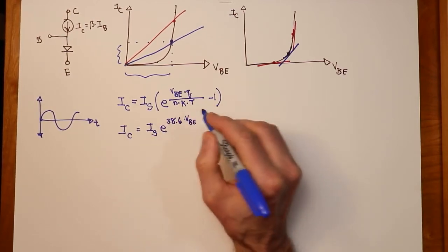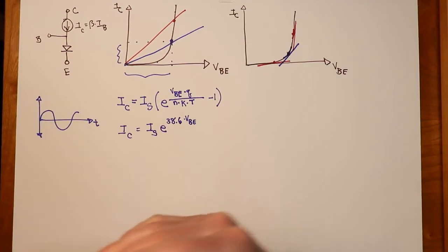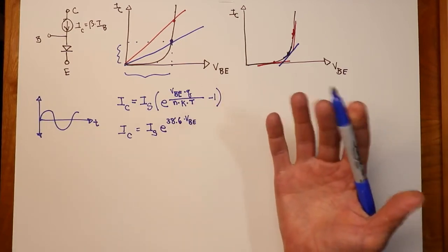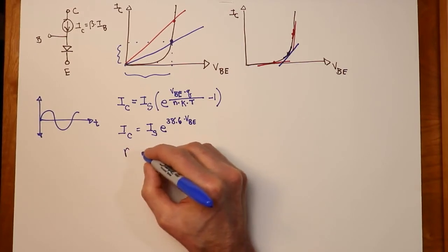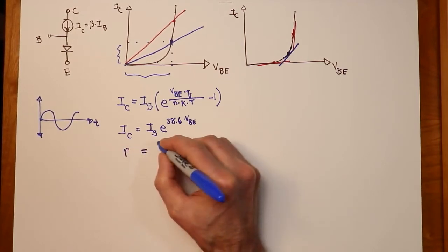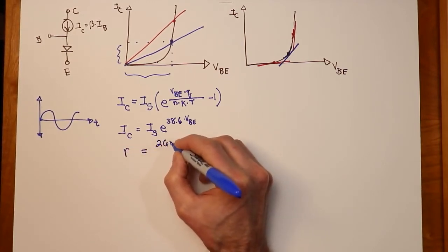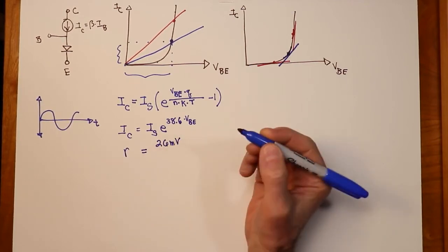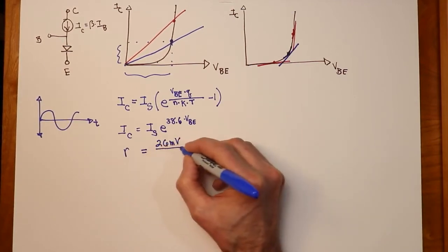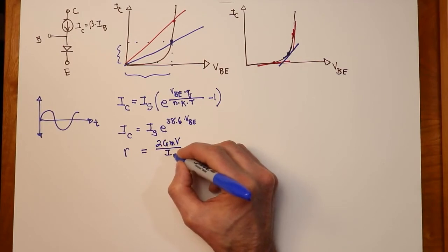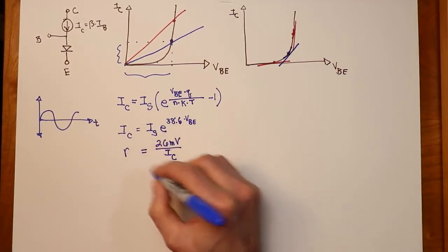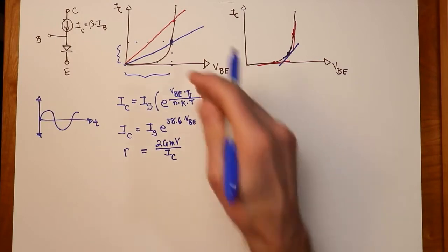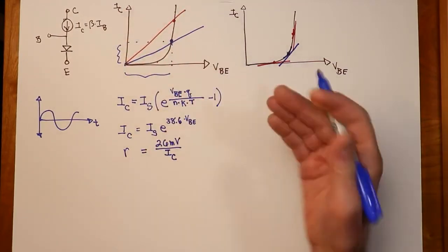So we'll take the derivative of this, and we wind up, here's sort of the bottom line, we wind up with a resistance value that's equal to 26 millivolts divided by the emitter current, which of course is the same as the collector current. You can use those interchangeably.